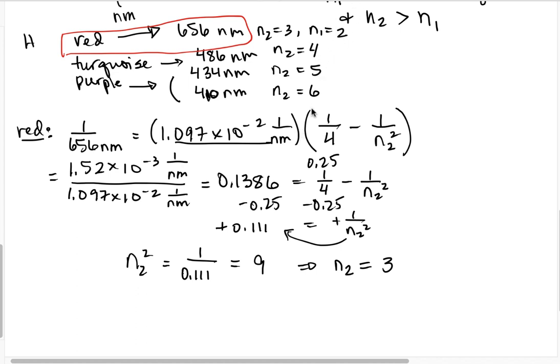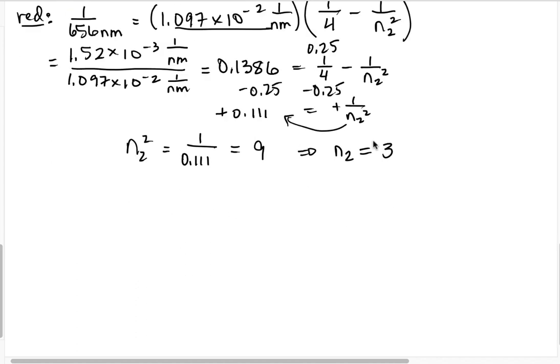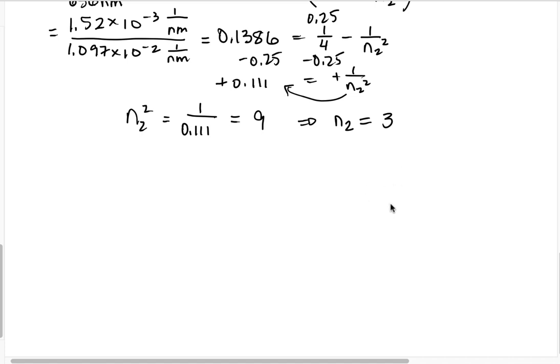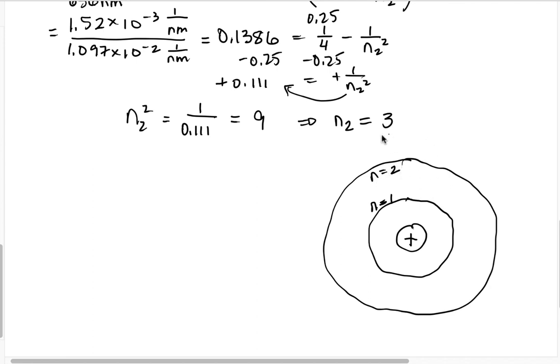Balmer had no idea why this worked. Like, zero. So remember we were talking about Niels Bohr a minute ago? Niels Bohr said, well what if what's happening in these atoms is that you have your nucleus, and then you have like little orbits. So I've got an n equals 1 orbit, I've got an n equals 2 orbit, I've got an n equals 3 orbit. And so he said, what if the wavelength, this red wavelength, happens because my electron gets excited up to this n equals 3 level, and then it drops down to this n equals 2 level, and it gives off some light that's red.